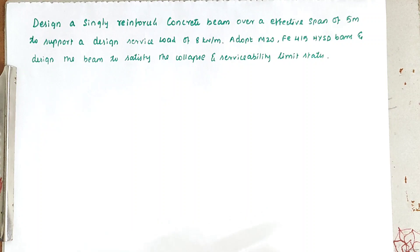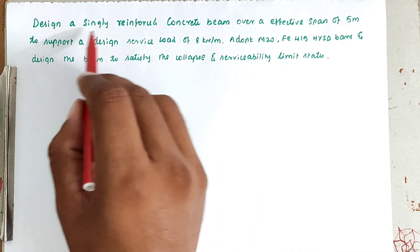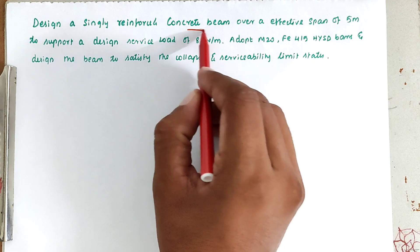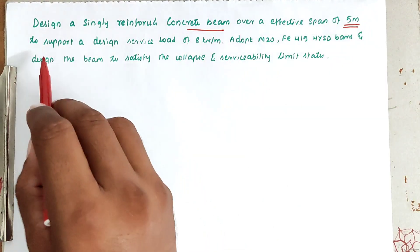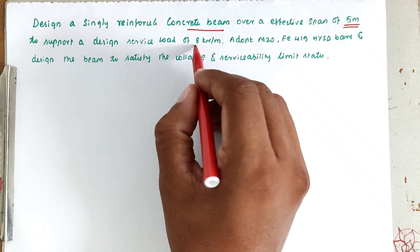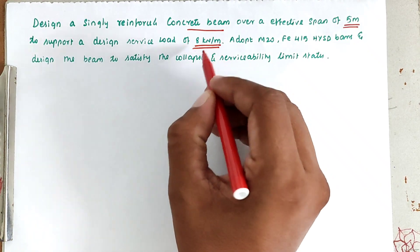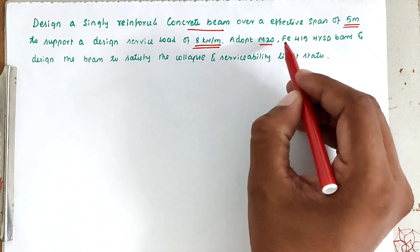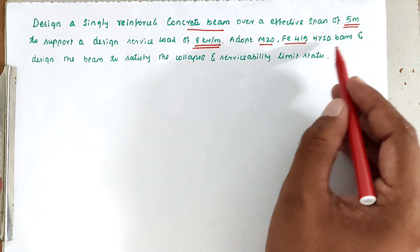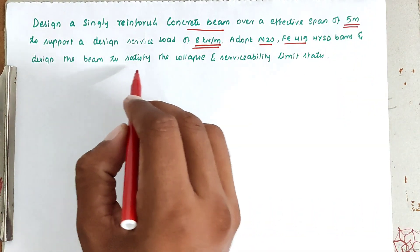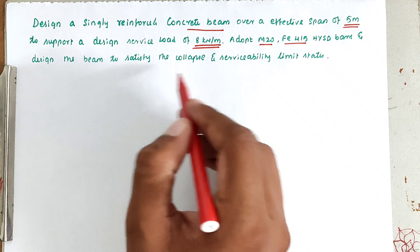Hello friends, welcome to Civil Engineering Exam. Today we're going to see a problem related to design of reinforced concrete elements in the topic of singly reinforced beam. The problem is: design a singly reinforced concrete beam over an effective span of 5 meters to support a design service load of 8 kilonewton per meter, using M20 grade concrete and Fe415 steel. Design the beam to satisfy the collapse and serviceability limit state.